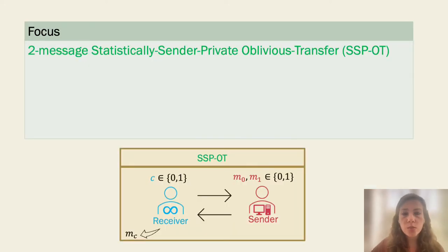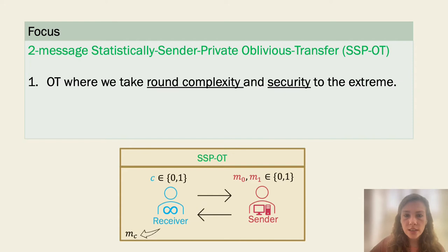In this work, we focus on two-message Statistically Sender-Private Oblivious Transfer, or SSP-OT in short. This is an Oblivious Transfer protocol where we really take the round complexity and the security to the extreme.